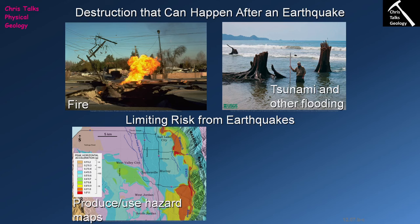Let's say we have historical data for an area indicating that a fault moves every 50 years — so every 50 years there's going to be an earthquake. If it's been 60 years since the last earthquake, we know that area is overdue for one and would give it an increased hazard rating.